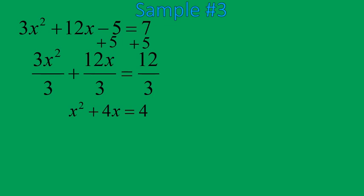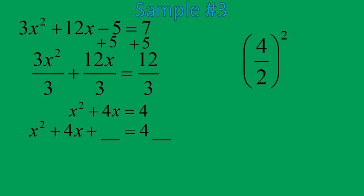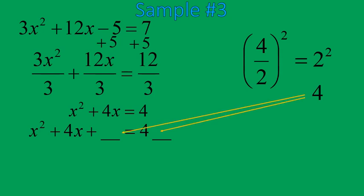I'm now in a similar situation where I need to find the number to be added to both sides to keep things balanced. To find that number, I take 4 — the number in front of x — divide it by 2, giving me 2, and 2 squared gives me 4. So I'm going to add 4 to both sides, giving me an equation that has a whole lot of 4s in it: x squared plus 4x plus 4 equals 4 plus 4.